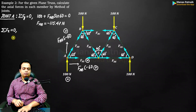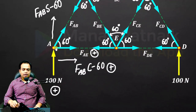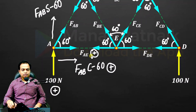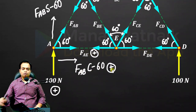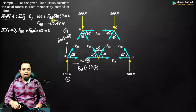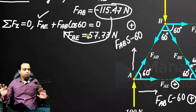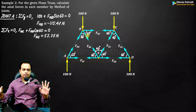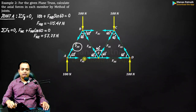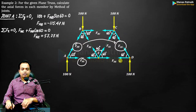Now let's go for summation FX = 0. At joint A along the X direction there are two forces: FAE (positive) and FAB·cos 60 (positive). You simply plug in the value of FAB into this equation and solve for FAE, which works out as 57.73. Joint A is completely analyzed. Since the entire structure and loadings are symmetrical, we also have FCD and FDE by symmetry.